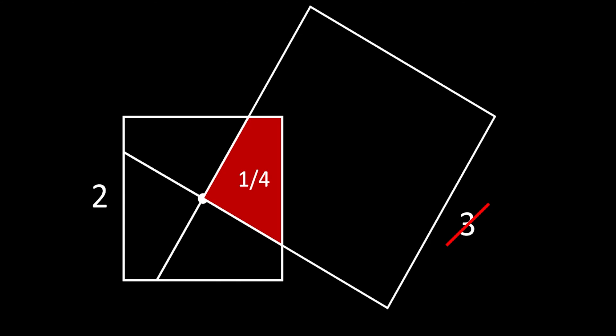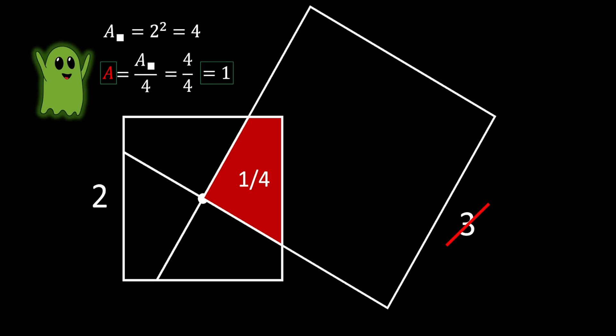All that we need to do to find our solution is to first find the area of the small square. Since the side is equal to two, the area must be equal to two squared, which is equal to four. And we can find this red shaded area if we divide the area of the small square with four. In our case, this is four over four, and that is equal to one. And this is our solution.